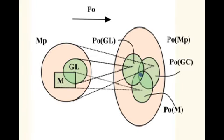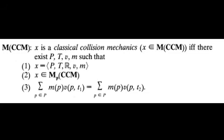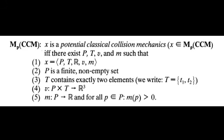As an example, here is a reconstruction of classical collision mechanics. We see that the set of models contains mass, velocity and a set of particles, as well as the actual law for conservation of momentum. Although momentum isn't mentioned by name in this reconstruction.